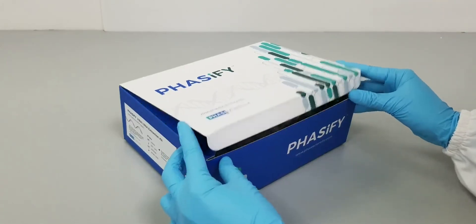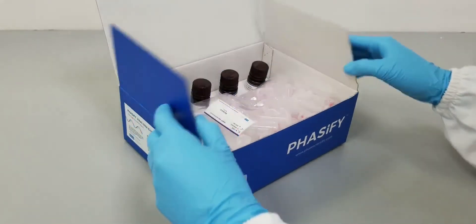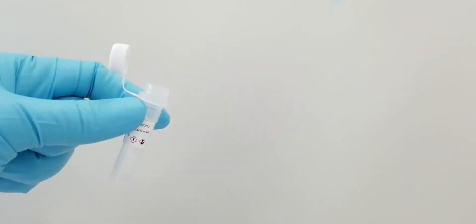When using the Phasify Viral RNA Extraction Kit for the first time, begin your solution preparation by adding 875 microliters of DNase RNase free water to a vial of powder B1.